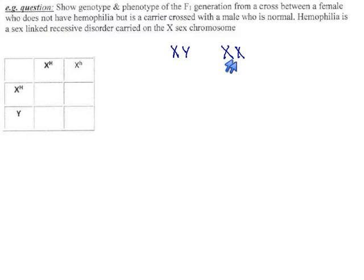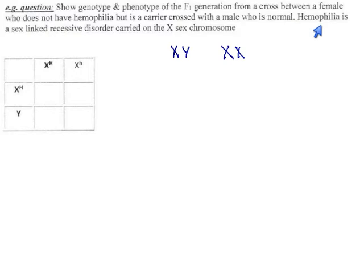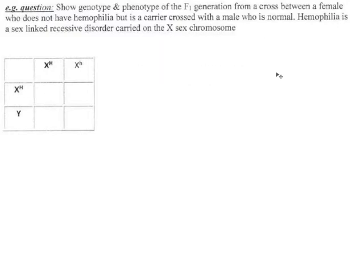Looking at those chromosomes, you can tell what sex a person is going to be, and there are some traits in addition to the sex-related ones that are on those chromosomes. One example of that is hemophilia. The X chromosome carries some instructions about how to build clotting factors in the blood, and if those are built incorrectly, hemophilia occurs — it's a condition where the blood does not clot properly. You cut yourself, and it just doesn't stop.